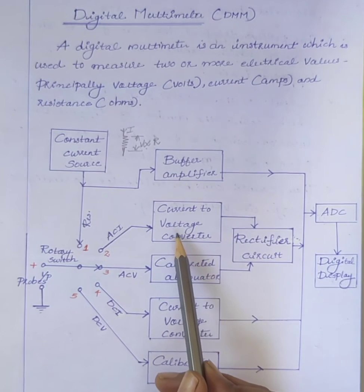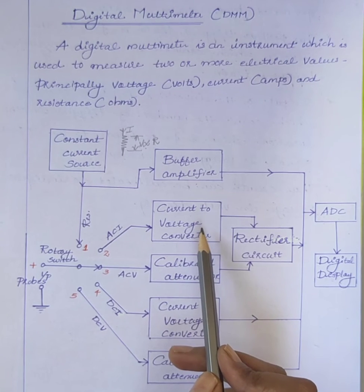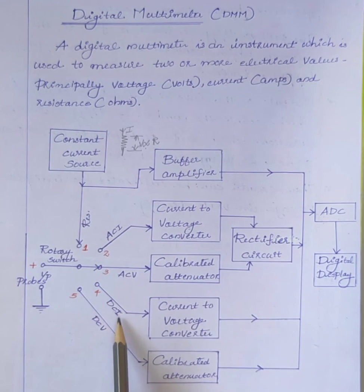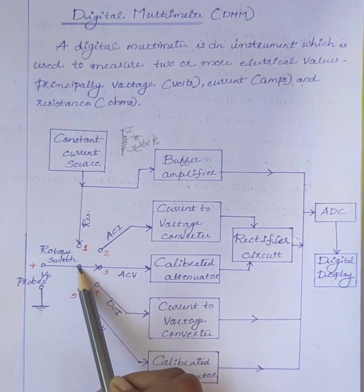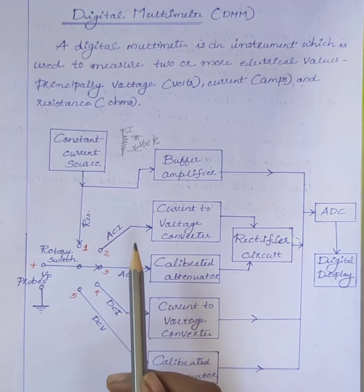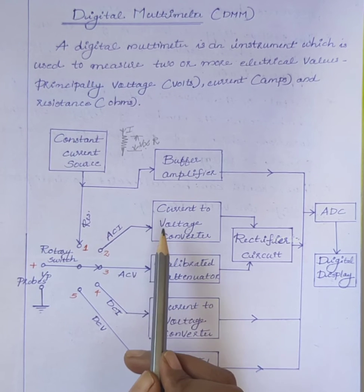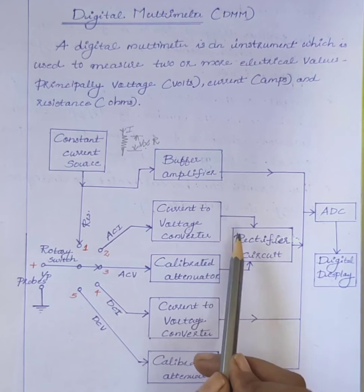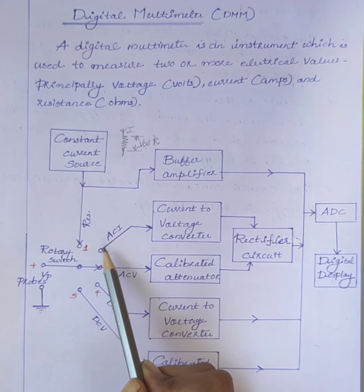Next is the measurement of current. Using the digital multimeter, we can measure AC current and DC current. In order to measure AC current, connect the rotary switch to terminal 2. In digital multimeters, if we want to measure AC values, we have to convert them into DC and then give them to the analog to digital converter.